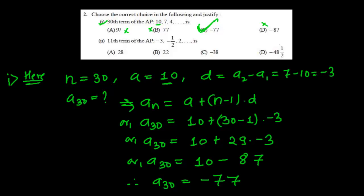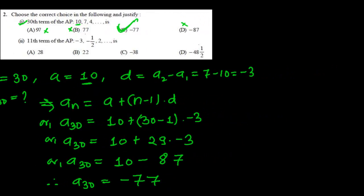Now the second question. Let me read the second question here: find the 11th term of an AP: negative 3, negative half, 2... The choices are: 28, 22, negative 38, or negative 48 and a half.